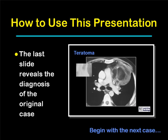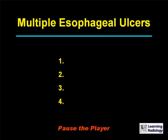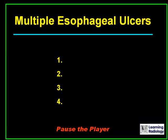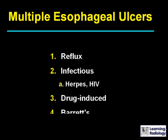This is the first differential: multiple esophageal ulcers. There are four causes: reflux esophagitis, infectious esophagitis such as herpes or HIV, drug-induced esophagitis, and Barrett's esophagus.